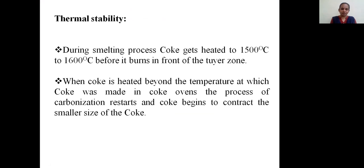Thermal stability. During smelting process, coke gets heated to 1500 degree Celsius to 1600 degree Celsius before it burns in front of the tuyere zone. So during smelting process, coke gets heated around 1500 to 1600 degree Celsius before it burns in front of the tuyere zone.